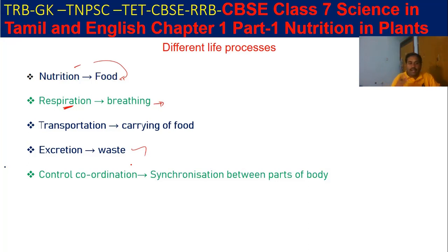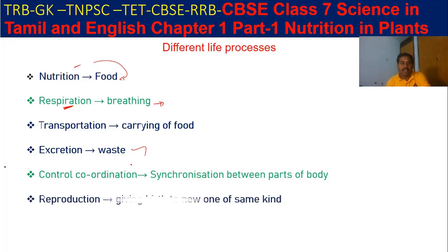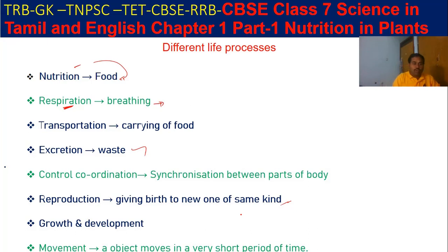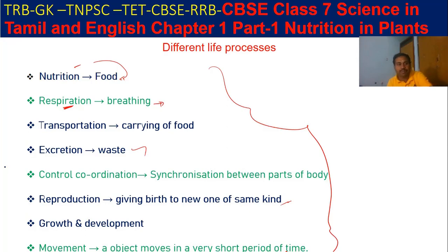If there is no coordination, the body is not able to control itself — that is why it is called control and coordination. Then the next one is the reproduction system — reproduction means generating new things of the same kind, giving birth to a new one of our same kind. Then growth and development of our body with the help of nutrition. And movement means an object moves in a very short period of time.